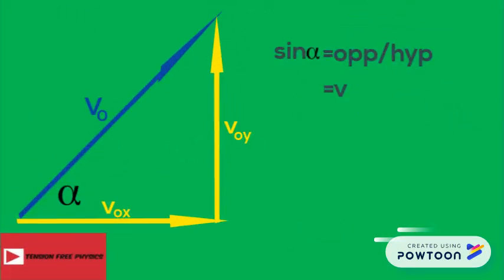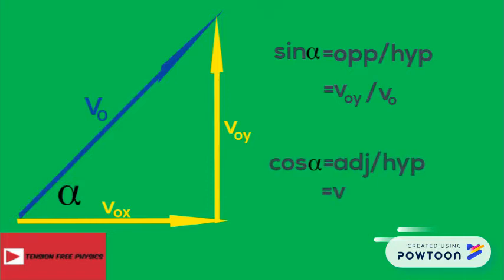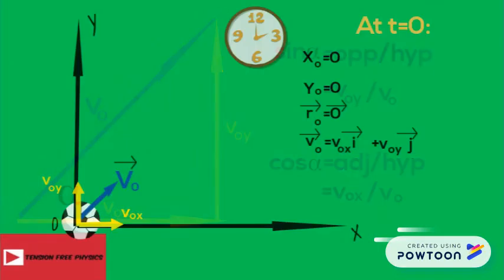In this triangle, sine alpha equals v0y over v0, so v0y equals v0 sine alpha. Cosine alpha equals v0x over v0, so v0x equals v0 cosine alpha. Inserting the values of v0x and v0y in the expression of v0, we get v0 equals v0 cosine alpha i plus v0 sine alpha j.